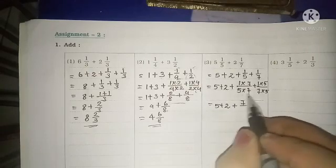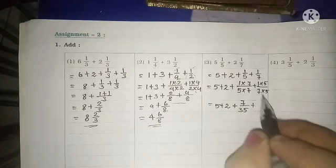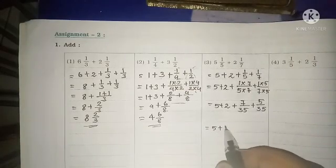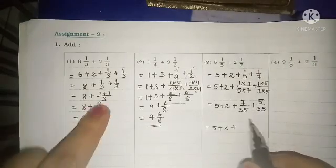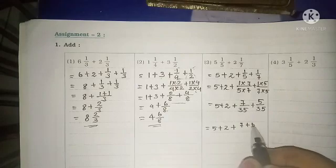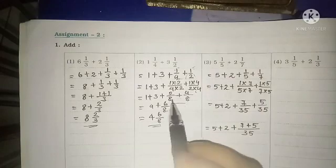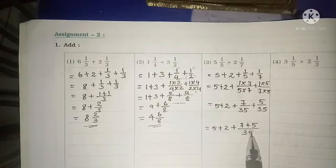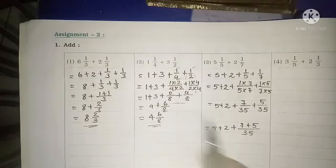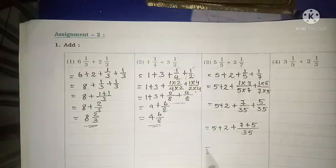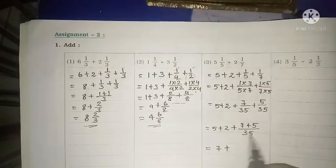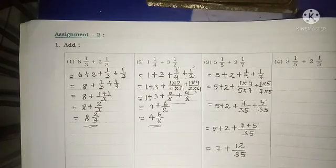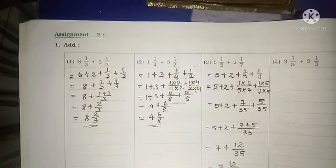So we get: five plus two, plus seven upon 35 plus five upon 35. Now the denominators are the same. Five plus two is seven, and seven plus five is twelve, giving us seven plus twelve upon 35. Removing the plus sign, the answer is seven and twelve upon 35.